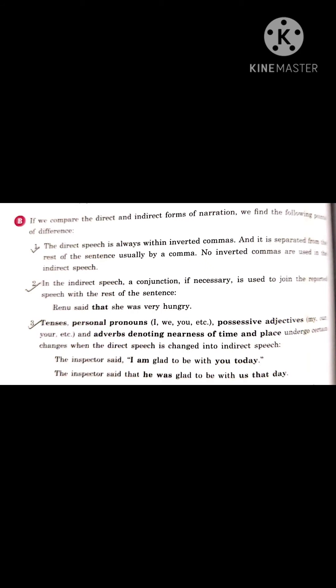If we compare the direct and indirect forms of narration, we find these points of difference. What is the difference between direct and indirect speech? Direct speech is always within inverted commas and is separated from the rest of the sentence usually by a comma. No inverted commas are used in indirect speech.